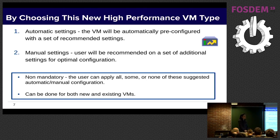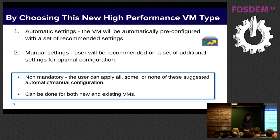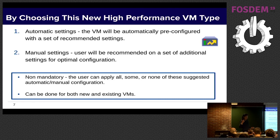Two things to emphasize: first, nothing is mandatory. All the automatic and manual settings are non-mandatory. The user can choose to set all of them, none of them, or part of them, depending on what they want to do. Another thing is that you can do this for a new VM or an existing VM — you can take a server VM and switch it to high performance just by changing the VM type and setting the manual settings.